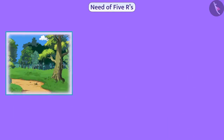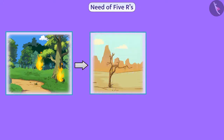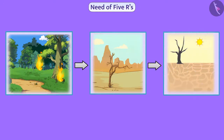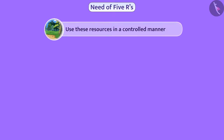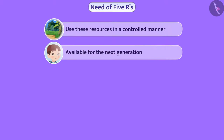Many natural resources are limited. Due to rapid exploitation, these resources are decreasing rapidly. If the speed of their exploitation is not controlled, then these resources will not be available for our future generations. So we must use these resources in a controlled manner so that they are available for the next generation.